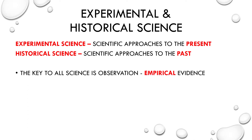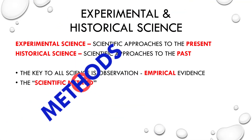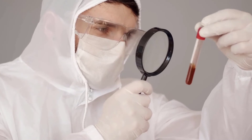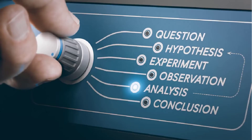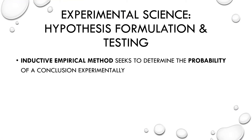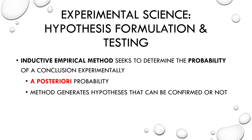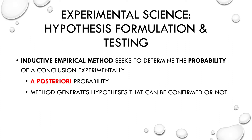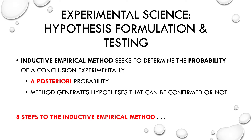The key to any scientific approach is always observation. Science is dependent upon empirical evidence — what's accessible through the senses. When we talk about scientific method — and it's better to say methods plural, since there's no one universal method — it starts with the empirical method of gathering observable and measurable evidence, and then proceeds with the formulation and testing of hypotheses to reach a best explanation. The inductive empirical method tries to determine the probability of a conclusion experimentally — this is that posterior probability we introduced in our last video. It requires the collection of data, so the probabilities can't be predicted beforehand, but only after experience.